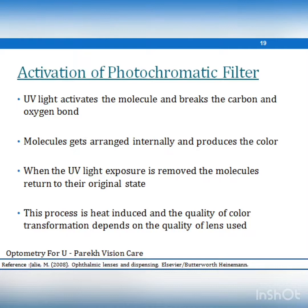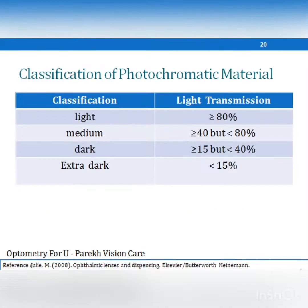UV light activates the photochromatic molecule and breaks the carbon-oxygen bond. These molecules then rearrange and produce color. When UV light is removed, they return to their original state and the lens becomes transparent again. Photochromatic material is classified as light, medium, dark, and extra dark, controlling light transmission in a range of 15–80%.